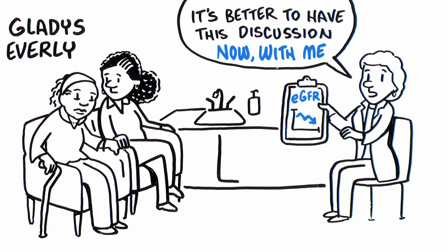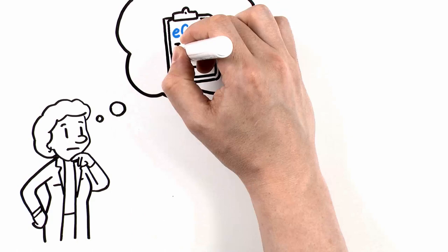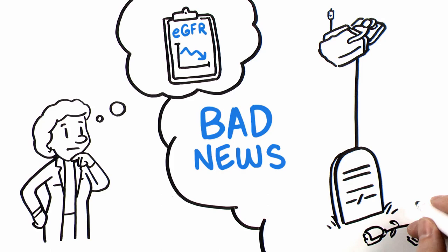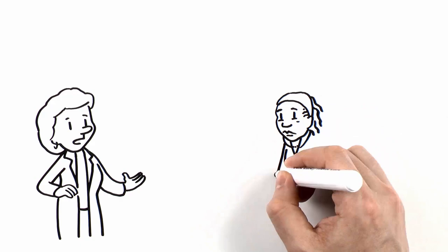You'll want to start by setting the stage. Gladys' kidneys have gotten worse, and this is bad news. Her kidney disease is life-limiting, and her health will surely decline. It's essential Gladys and her family understand that even with dialysis, her life will be very different. How can you make this clear?